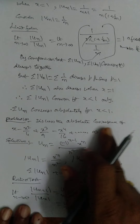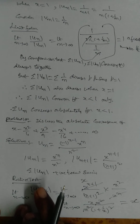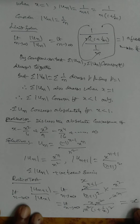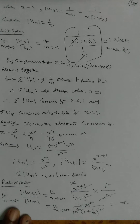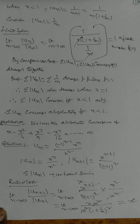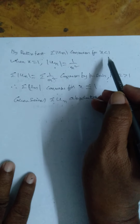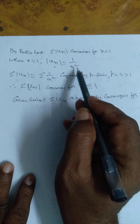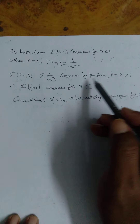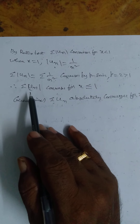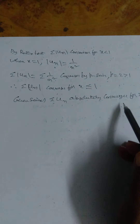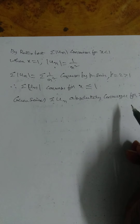For absolute convergence, we need σ|u_n| to converge. By ratio test, σ|u_n| converges for |x| < 1. When x = 1, |u_n| = 1/n², so σ|u_n| = σ(1/n²), which converges by p-series with p = 2 > 1. Combining these two cases, σ|u_n| converges for |x| ≤ 1. Therefore the given series σu_n converges absolutely for |x| ≤ 1.